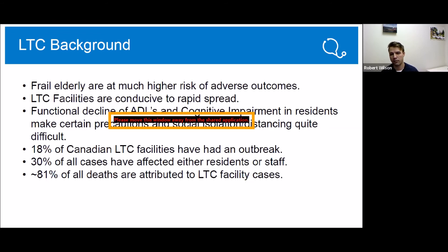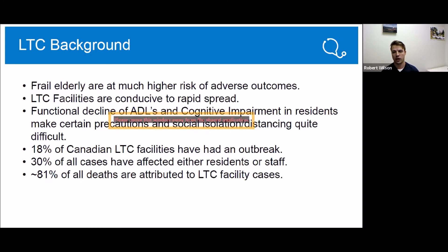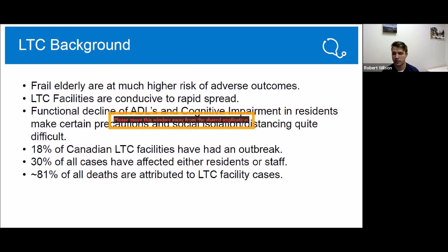There is functional decline of ADLs and cognitive impairment in residents which makes certain precautions and social distancing quite difficult in these facilities. Residents who need a lot of assistance require a lot of close contact between nurses, LPNs, or whoever is providing care, within this pandemic. Also, for those with cognitive impairment such as dementia or Alzheimer's, trying to enforce restrictions can be quite difficult. In terms of statistics: 18% of Canadian long-term care facilities have had an outbreak, 30% of all cases affected were either residents or staff, and 81% of all deaths were attributed to long-term care facility cases.